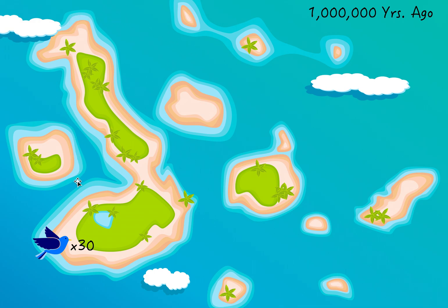But after a while these birds started reproducing more and more, and the islands became extremely crowded. And what happens when things get crowded? Competition is going to start happening — these birds are going to have to start competing for food.